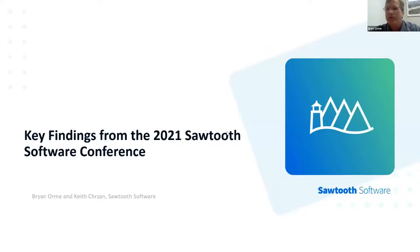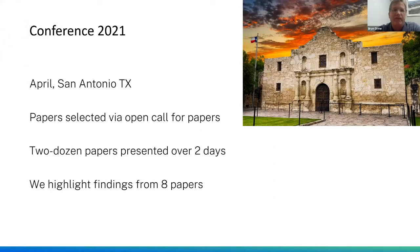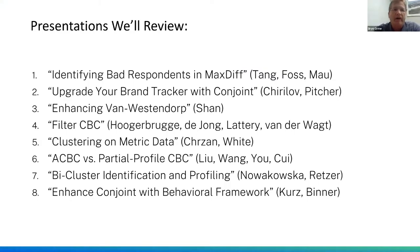Thank you very much for the introduction. Keith and I are pleased to be here to talk about some of the findings and things we took away from the 2021 Sawtooth Software Conference. We hold our conference annually and last year we were in San Antonio, Texas. The papers are selected via an open call for papers, and we had about two dozen papers presented over two days, mostly focused on conjoint, max diff, and market segmentation topics. We're going to highlight findings from eight of the papers that were particularly meaningful to us.